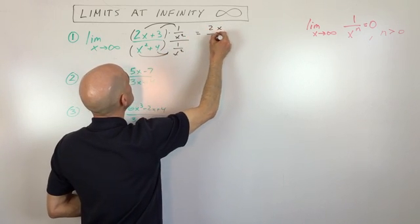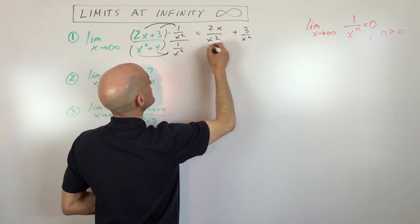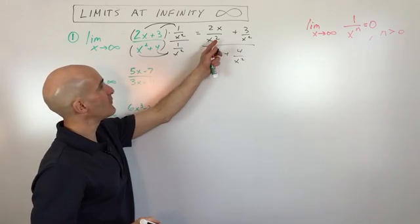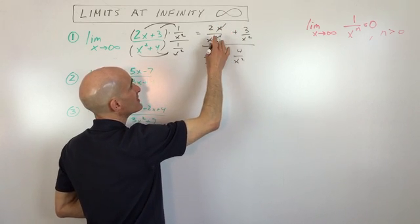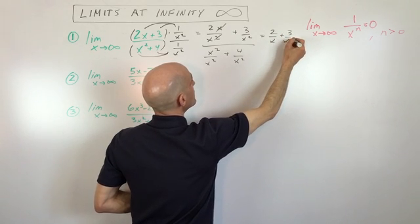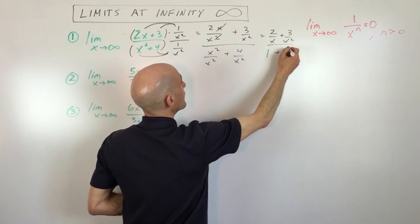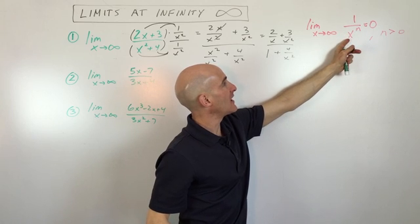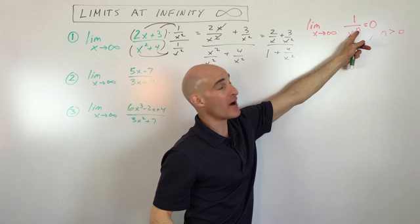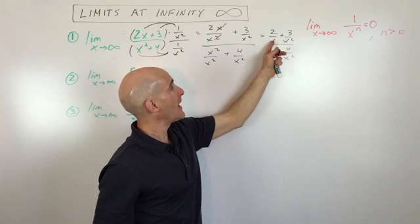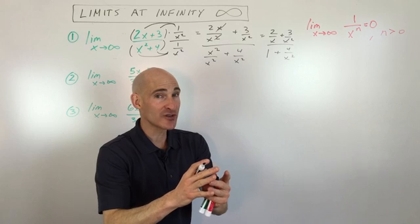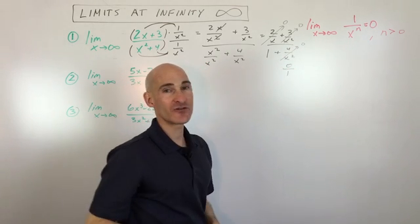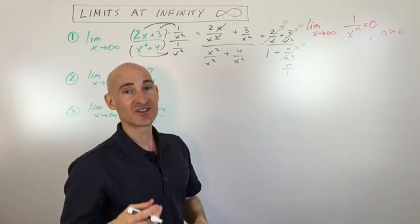After distributing, we get: 2x divided by x squared plus 3 divided by x squared, all over x squared divided by x squared plus 4 divided by x squared. Simplifying further, one of the x's cancels, giving us 2 over x plus 3 over x squared in the numerator, and 1 plus 4 over x squared in the denominator. Since the numerator is a constant and the denominator has a variable raised to a positive exponent, each of those terms approaches 0, leaving us with 0 divided by 1. So the limit is 0 as x approaches infinity.